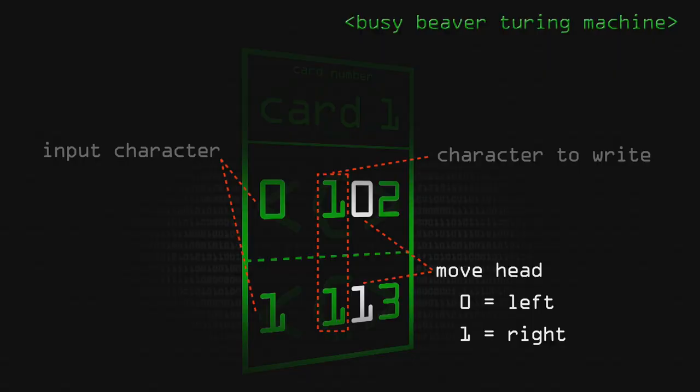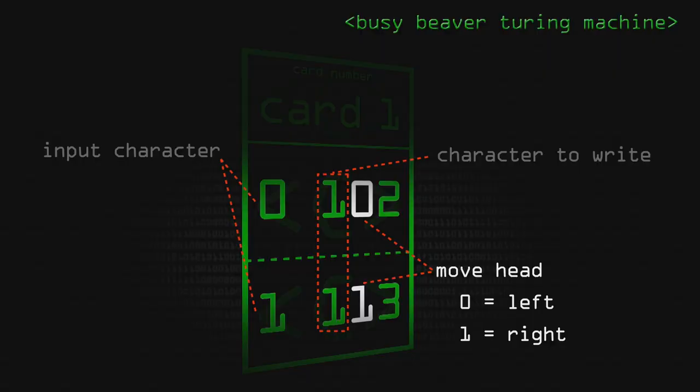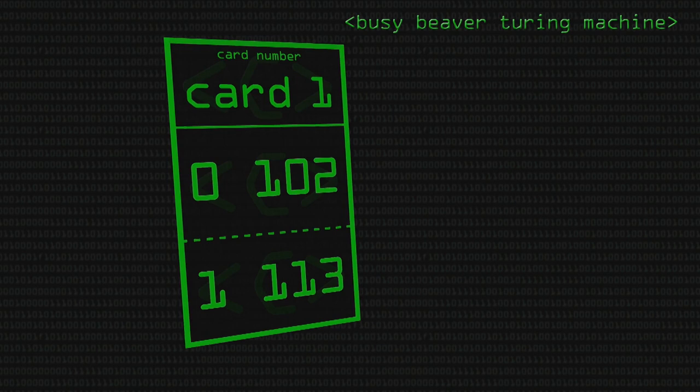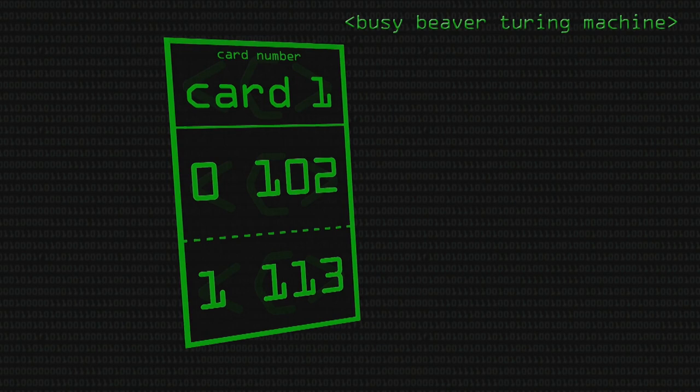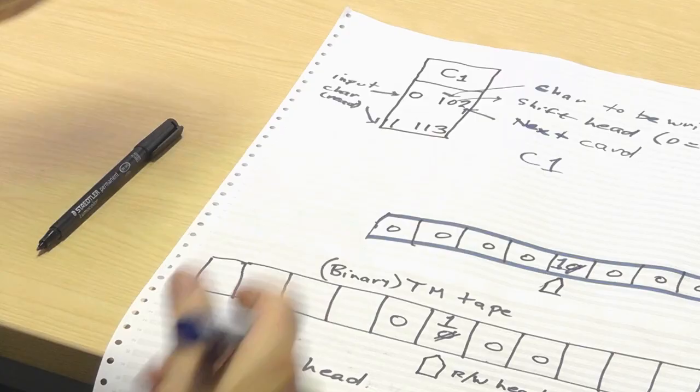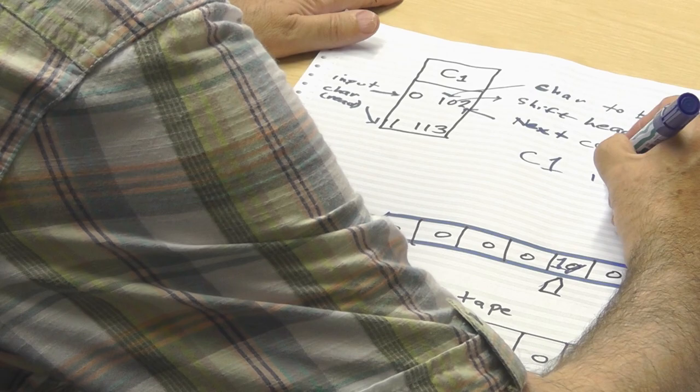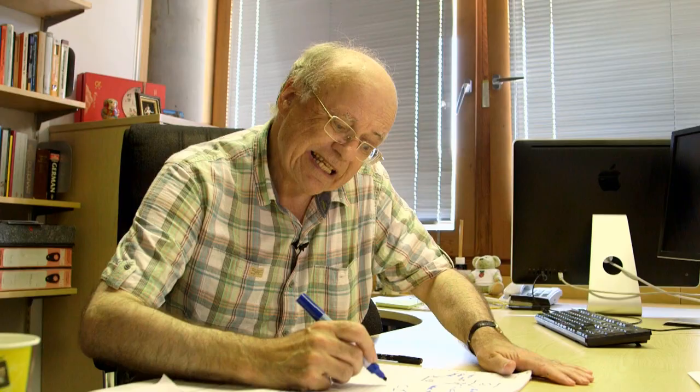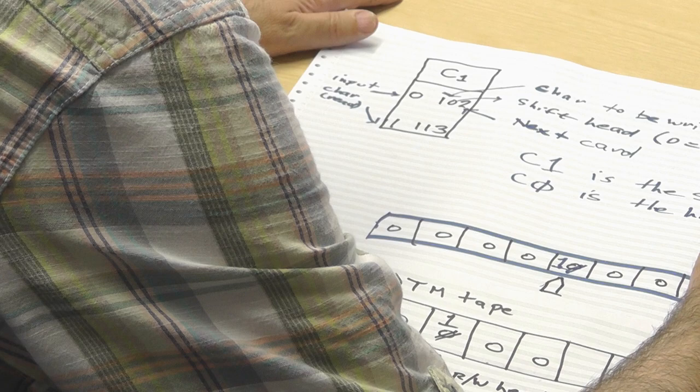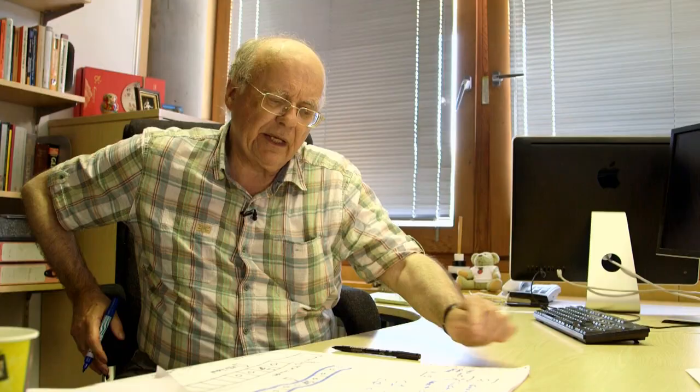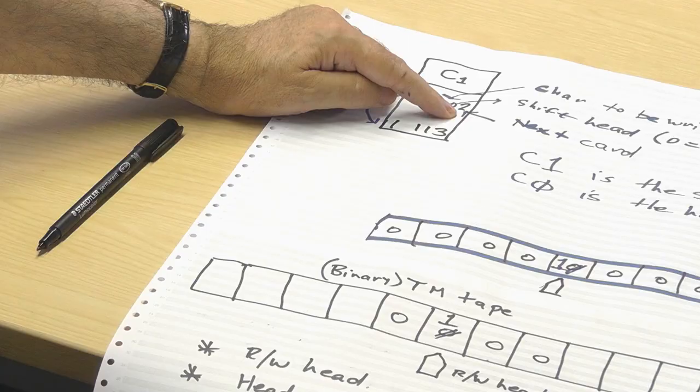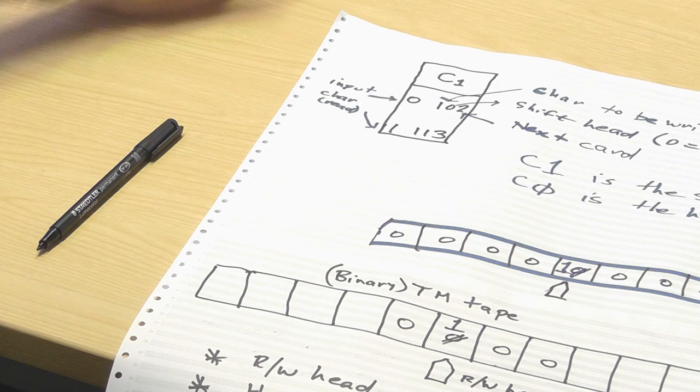And then finally, what's this two here? That's your next instruction, two. We're on card one. Your next instruction will be on another card, card two. You've got all of these actions that must happen if you read a zero in this current state of the machine. C1 is the start card. C0 is the halt card. If something in one of these instructions says your next card is zero, you're going to halt. The zero card is the halt card. That's the general layout of these cards.